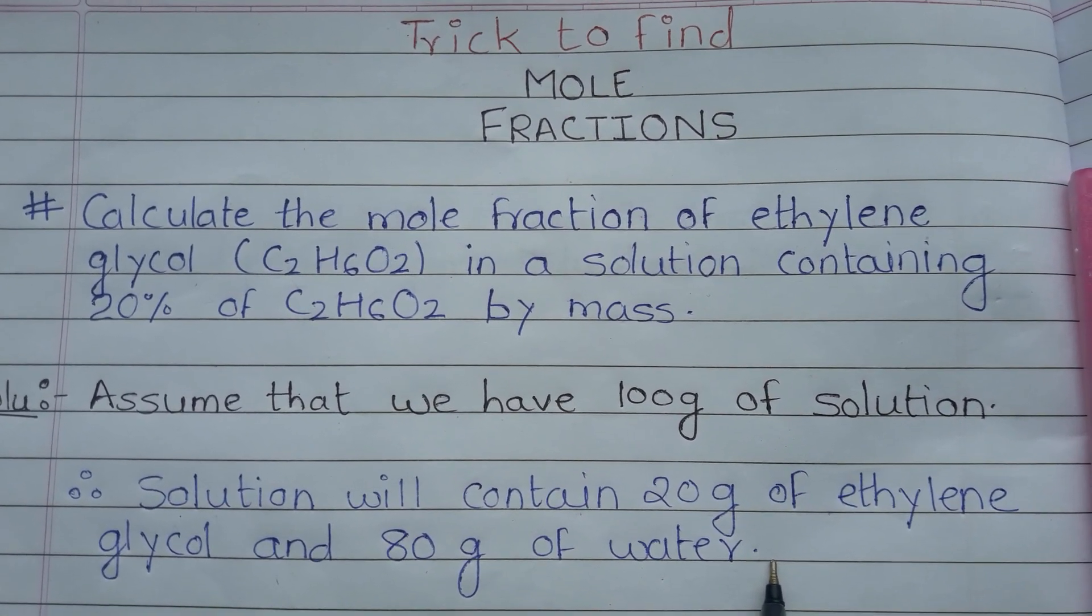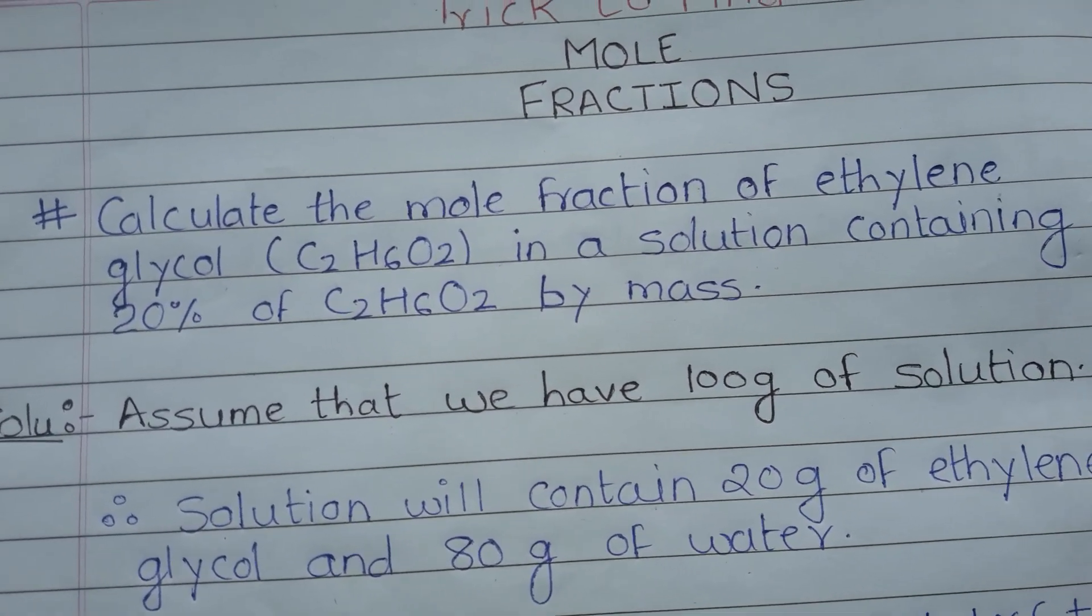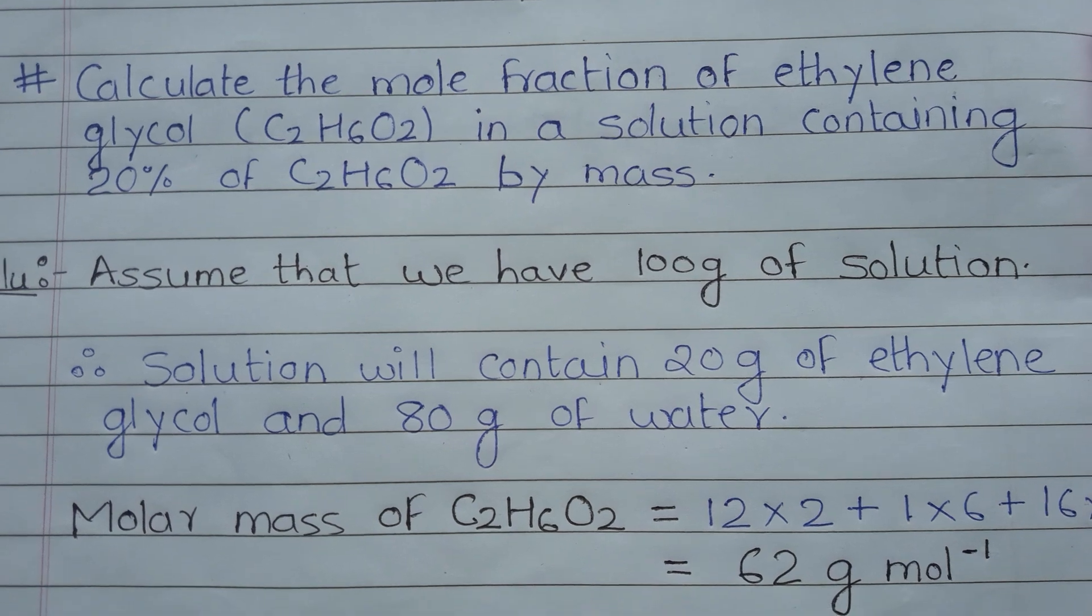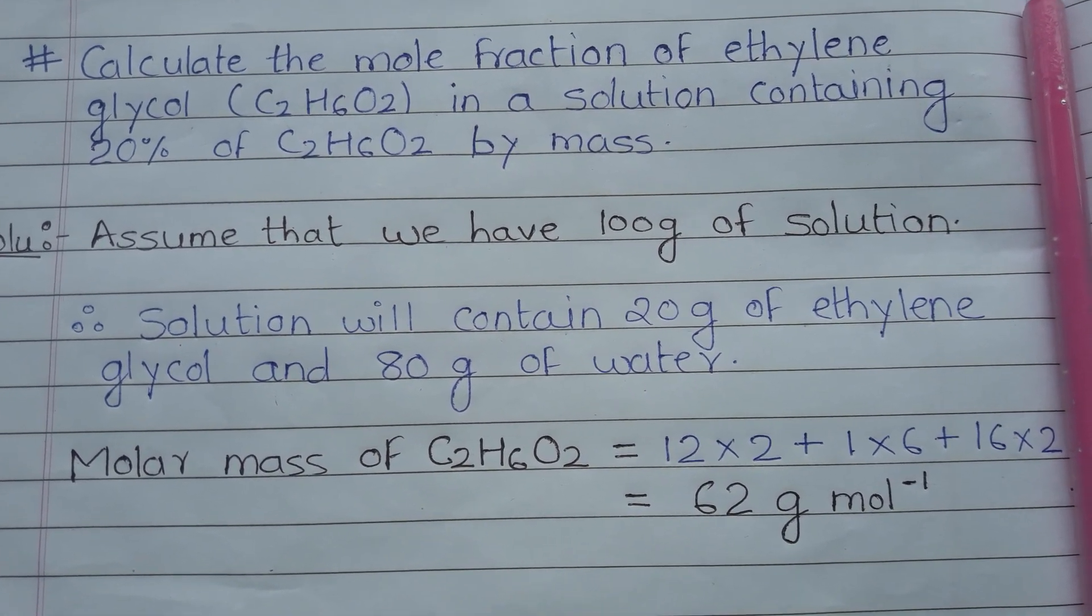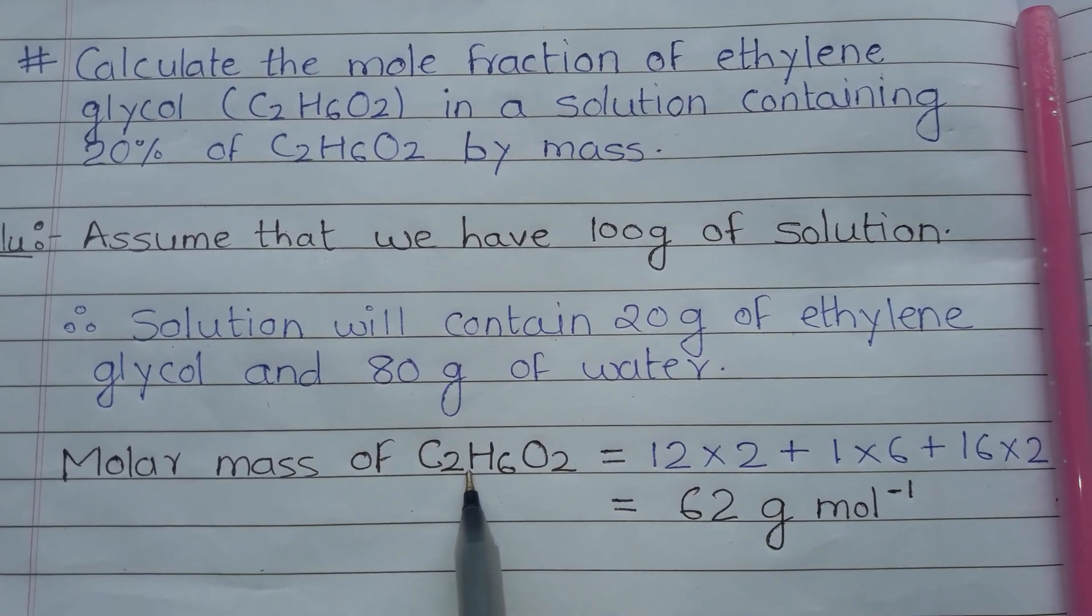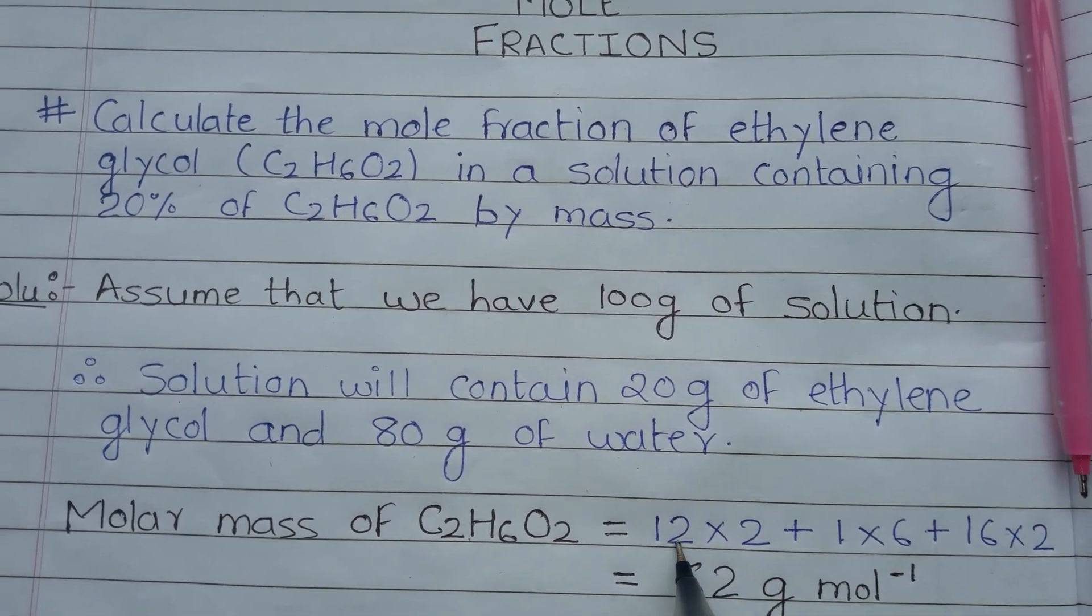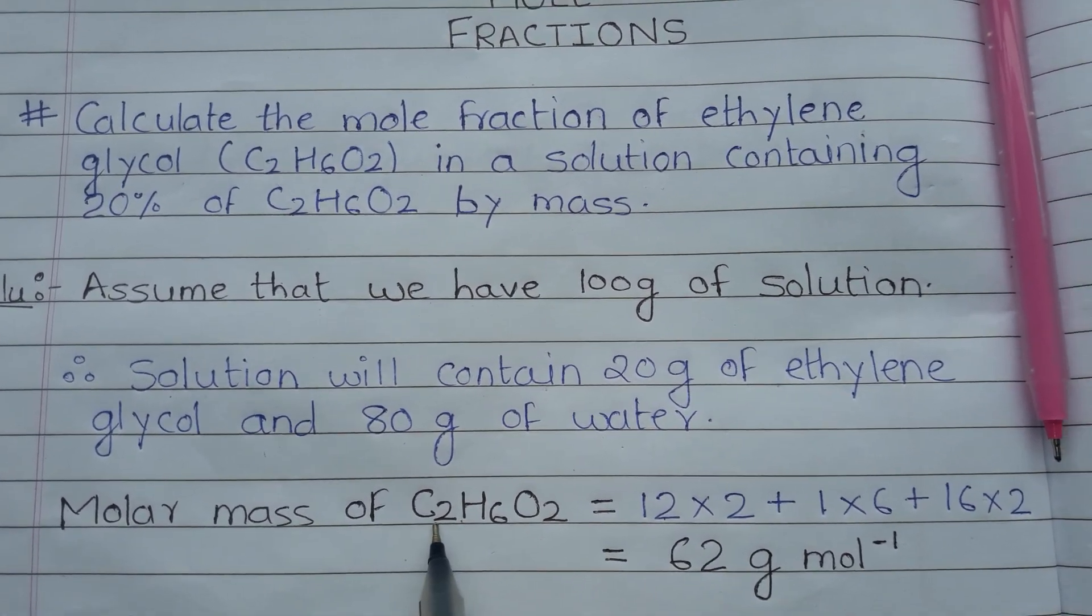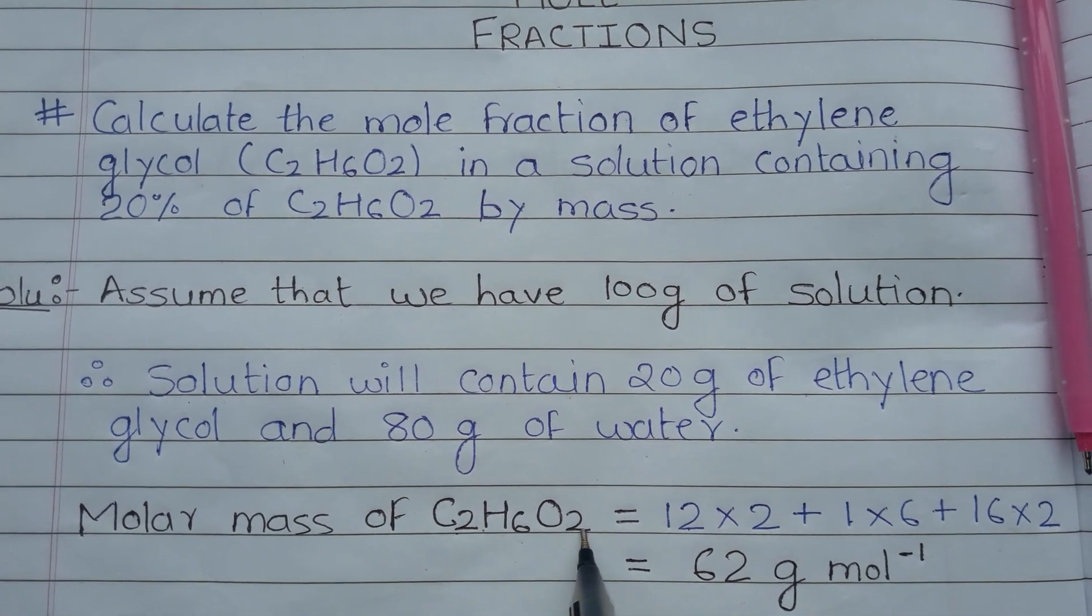What do we need to do? We need to find the ethylene glycol mole fraction. Let's see how we find ethylene glycol mole fraction. For the mole fraction, we need to find out the molar mass of ethylene glycol. First of all, we need to find out the molar mass. What is the chemical formula of ethylene glycol? C2H6O2.